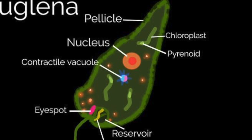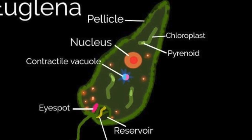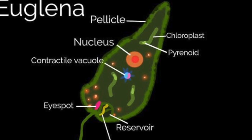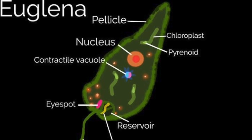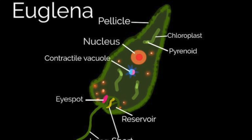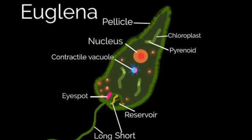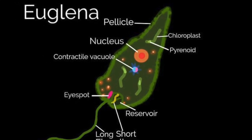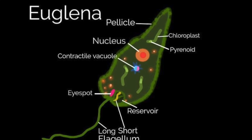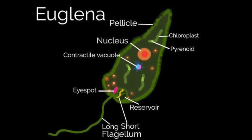Euglena gracilis, commonly known as Euglena, is under phylum Euglenophyta. Euglenas swim using a single flagellum which whips back and forth, propelling the microorganism forward. These small creatures obtain food in two manners: through their own photosynthetic system and by feasting on the nutrients of other microorganisms, such as amoeba.